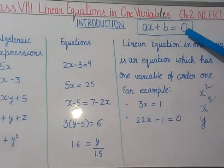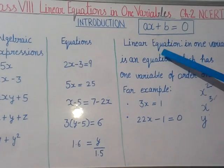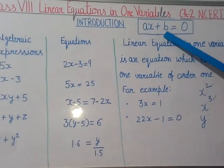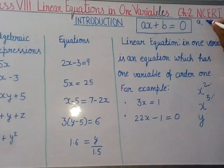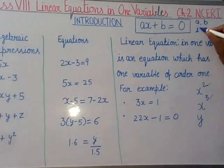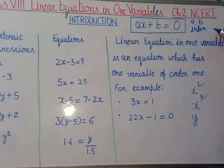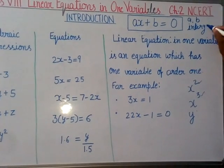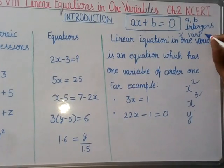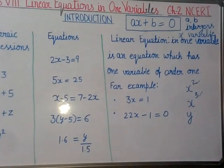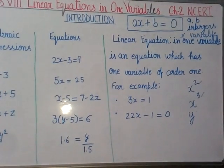Now, what is ax plus b equal to zero? Ax plus b equal to zero is the standard form of linear equation, where a and b are integers and x is variable. It may be real numbers also, but in class 8 you have learned only integers. So we can express linear equations in standard form like ax plus b equal to zero. Thank you.